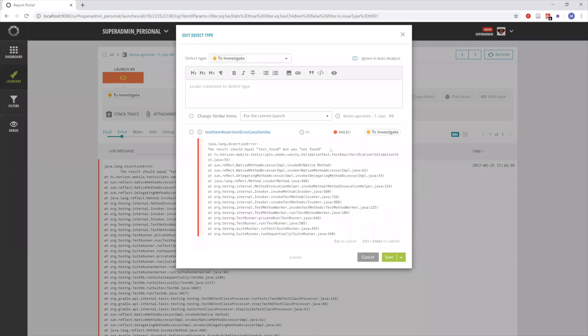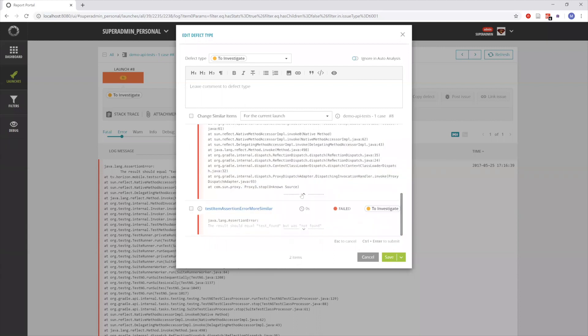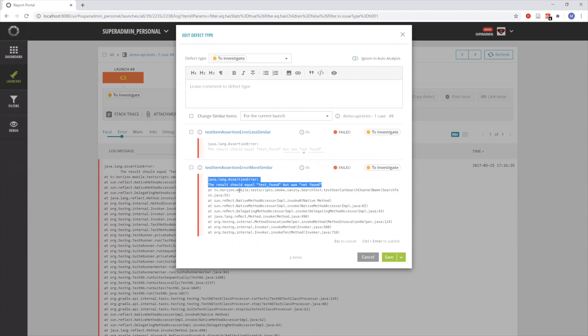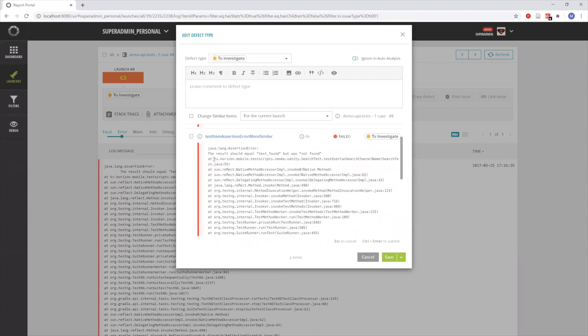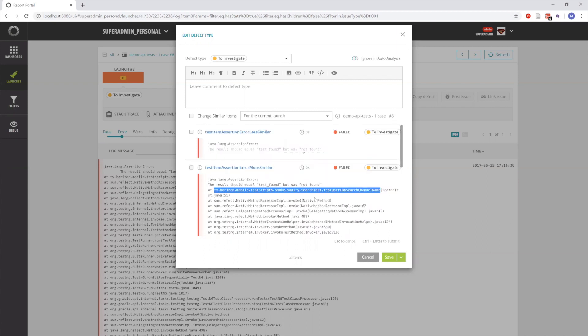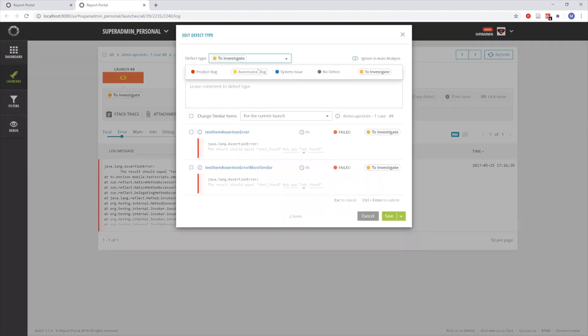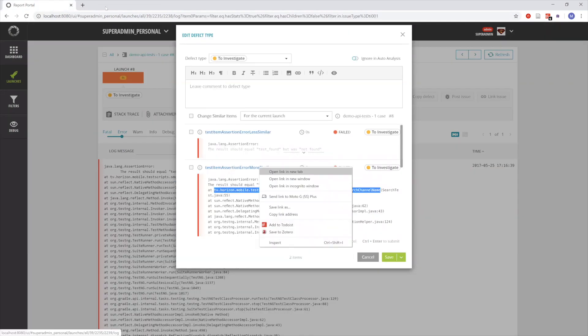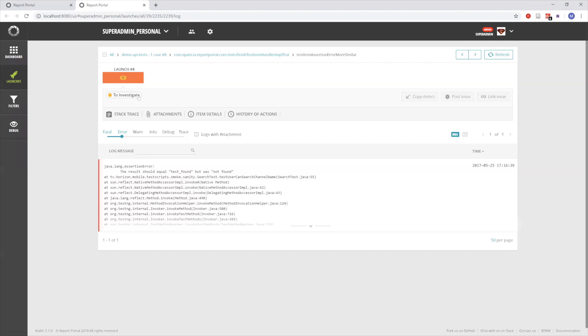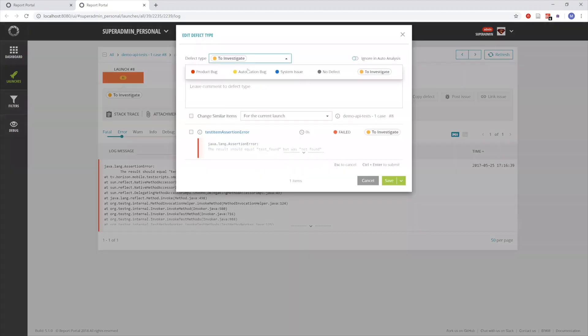For this test item we have two similar results, where both results have 100% match in the first two log lines, but one which has the name more similar has the same test method in the stack trace, whereas less similar has another test method in the stack trace. We are going to assign a defect type product bug to the first one, which is less similar, and the one which is more similar we are going to make an automation bug. Now we would like to run the autoanalysis to find how it will work in this situation.